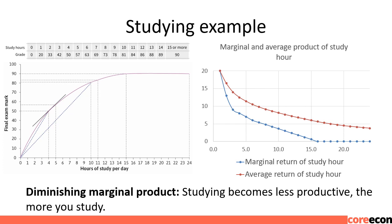The average product is falling too, because if the marginal product is falling and below average product, then the average product has to fall because we are adding a smaller amount than the previous average. At 2 hours of study, the grade is 33, so average product is 33 divided by 2, which is 16.5. At 3 hours, the grade is 42, so average product is 42 divided by 3, which is 14. After study hours reach 15, marginal product stays at 0, while average product continues to fall because you are adding 0 marginal benefit for each extra hour.